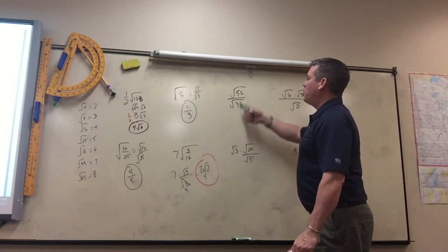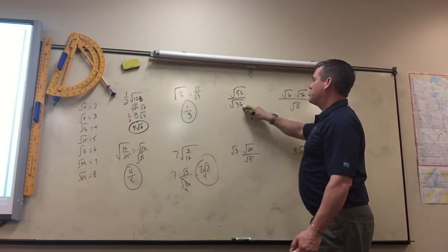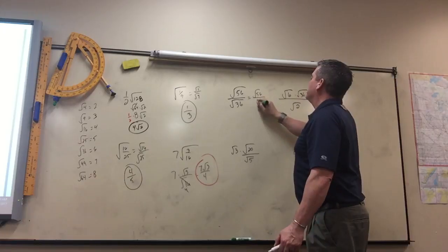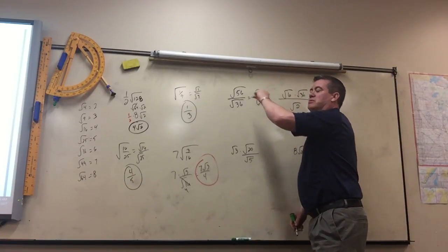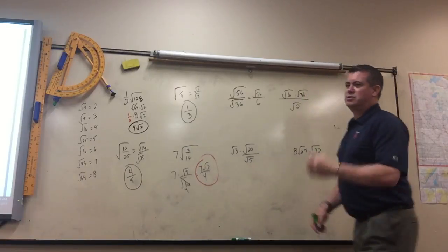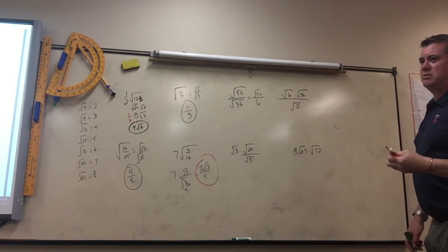Here, I wouldn't want to simplify it first. Does everyone see why I wouldn't? This is a perfect square. But now you've got to see if this will reduce. Does any perfect squares go into 56? 4.